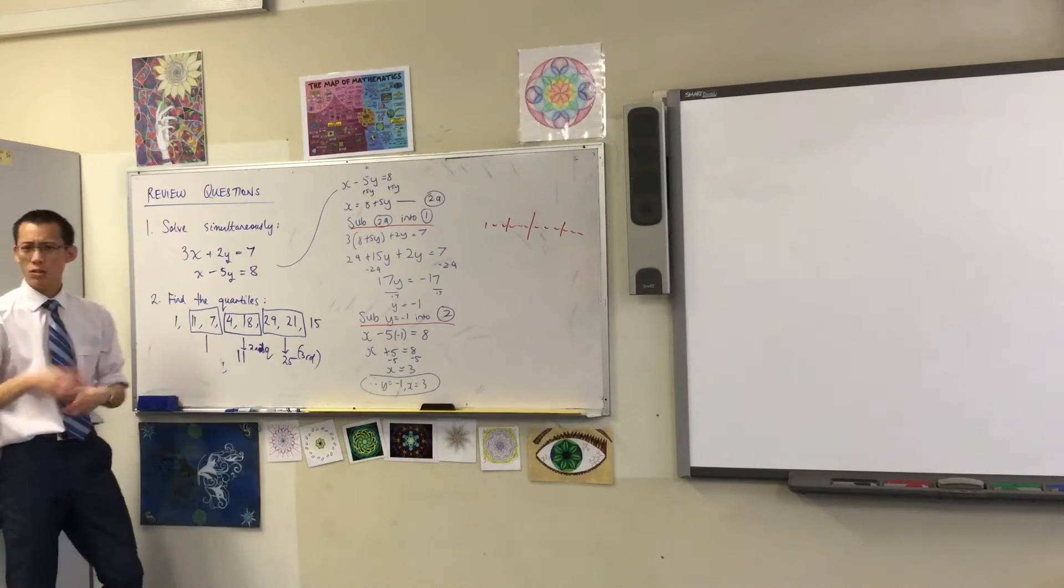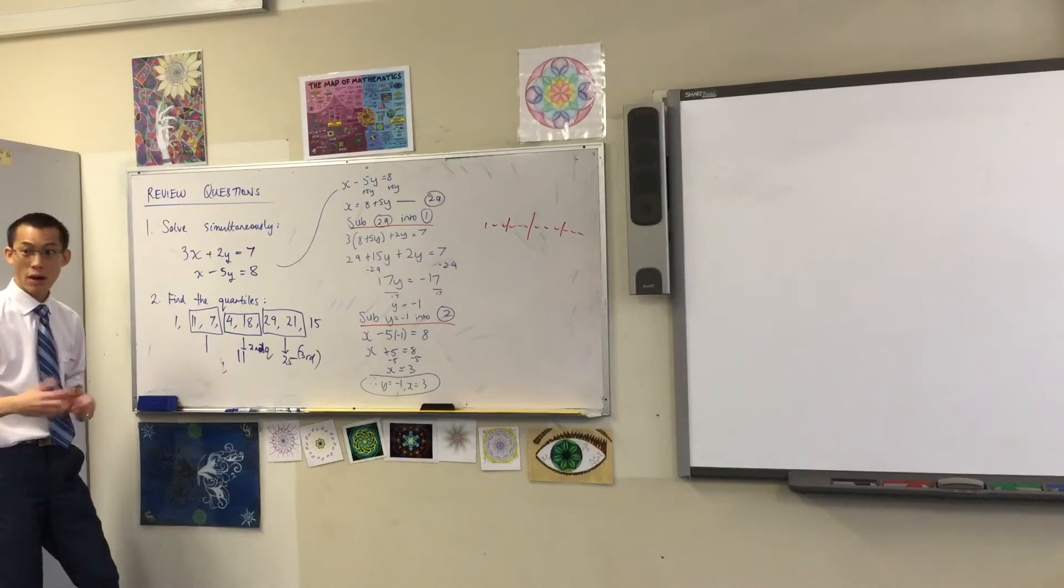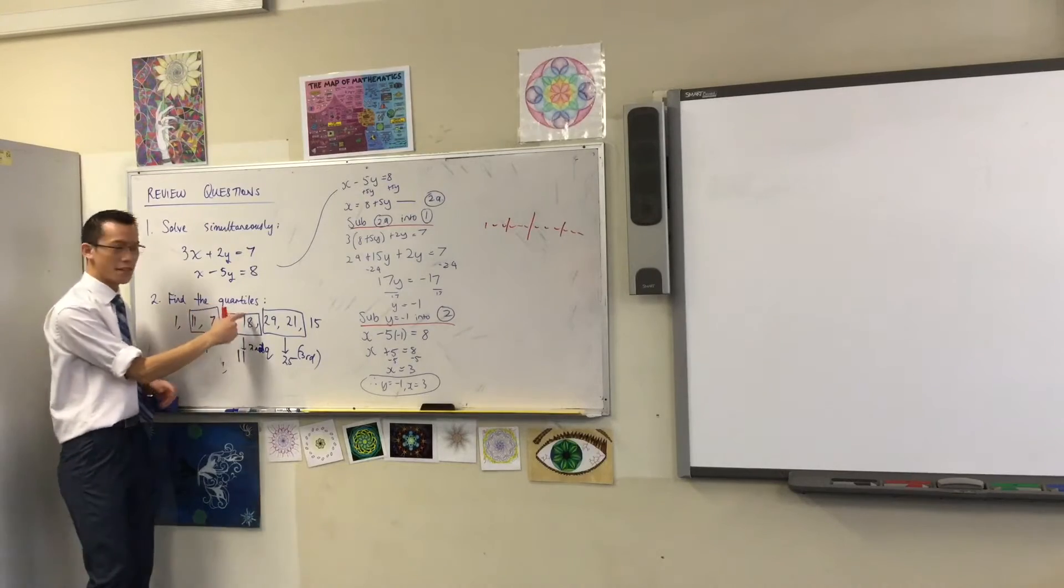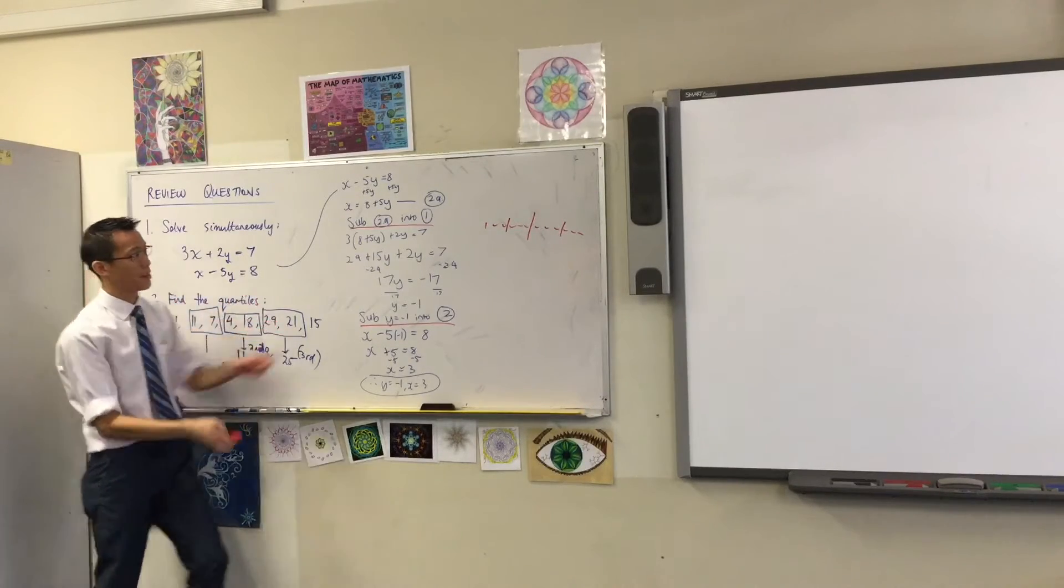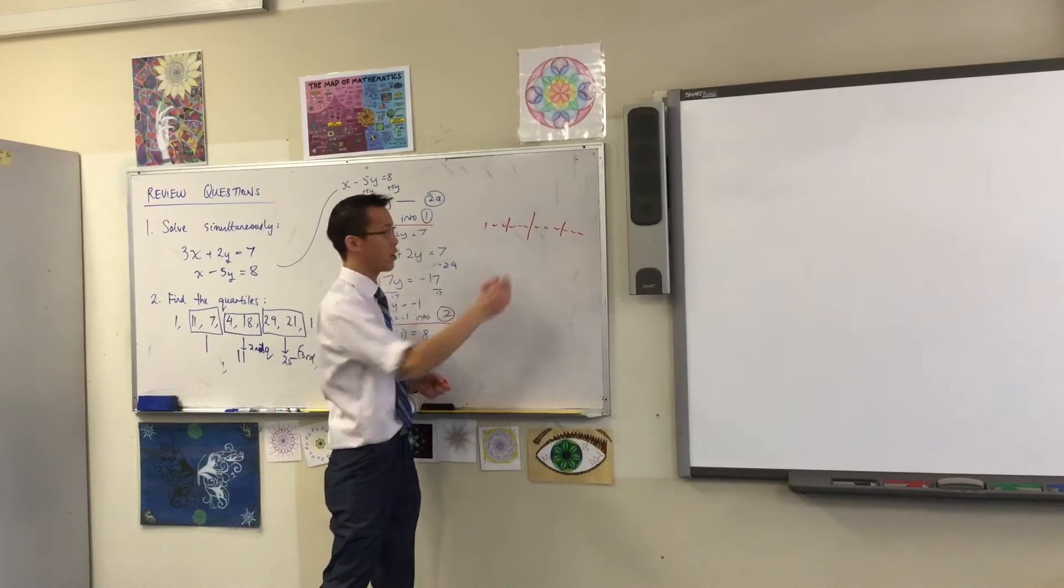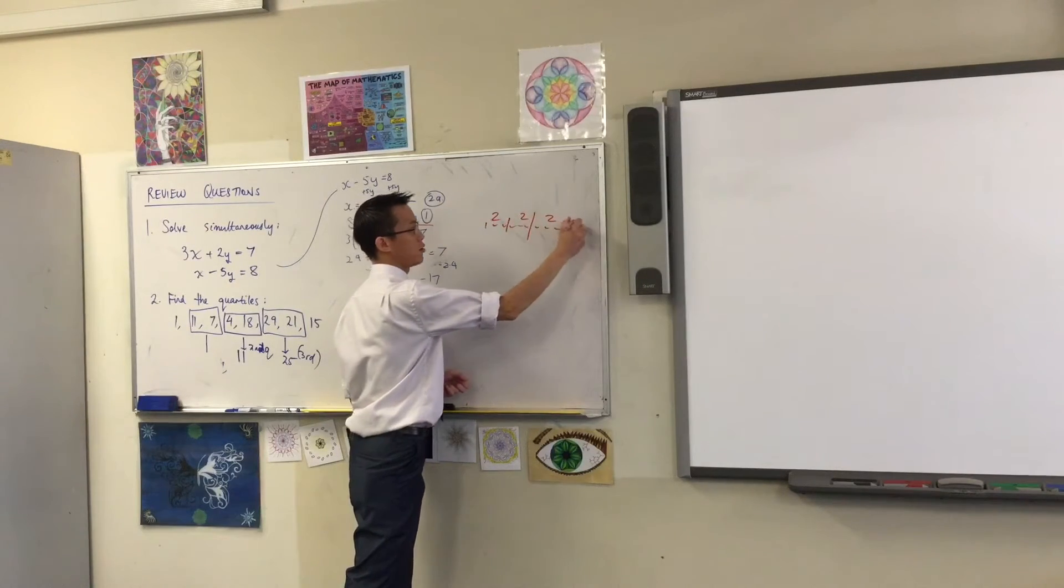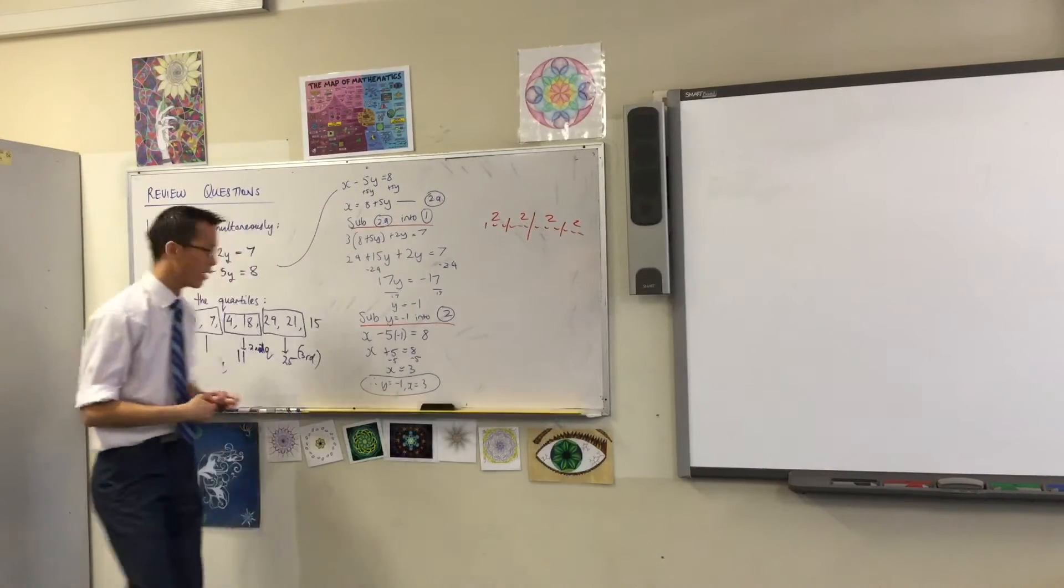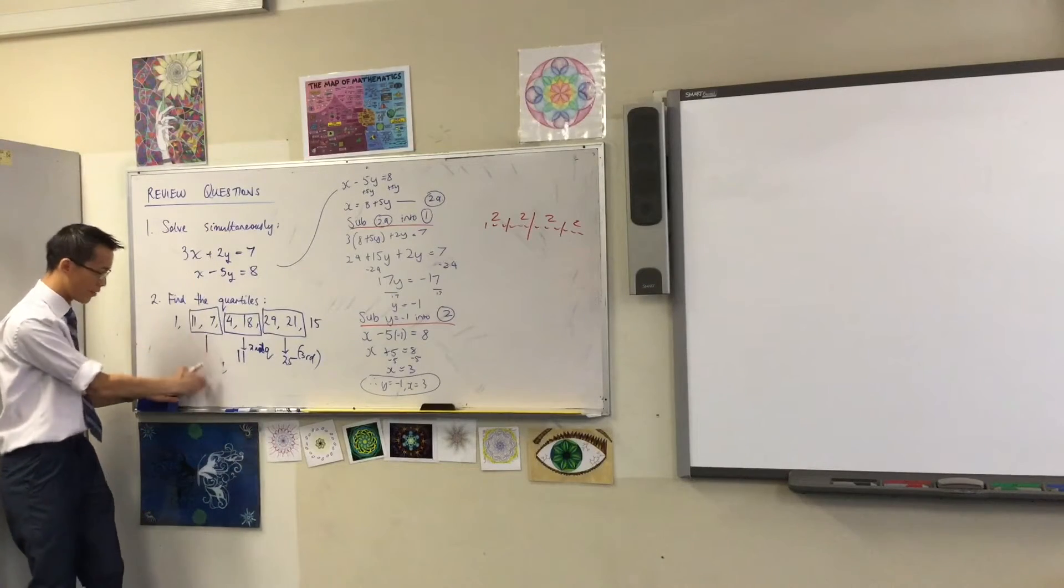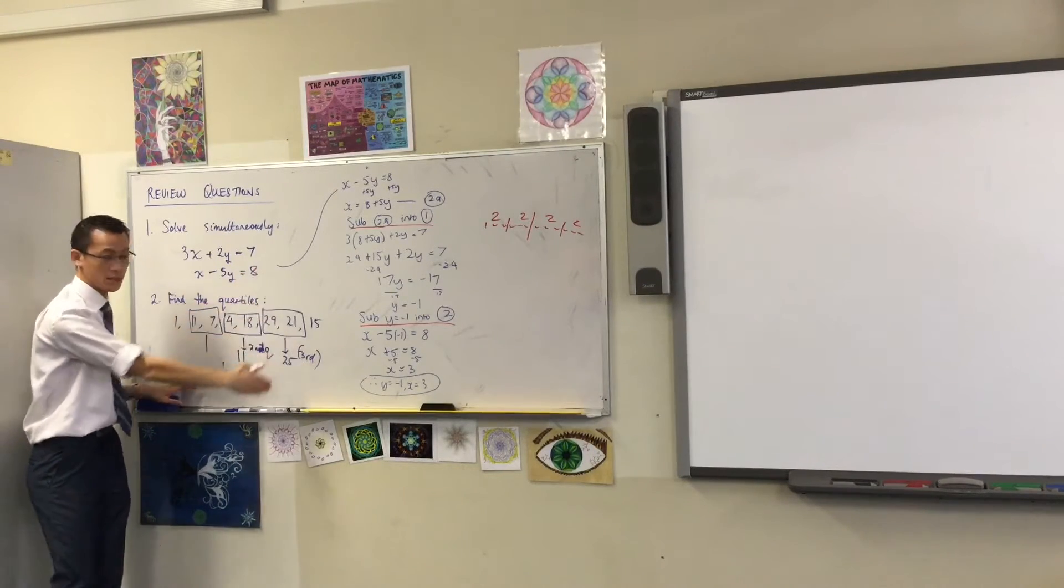Secondly, how many scores are there? Eight. There are eight scores. Which means each of the sections that I'm going to divide up into, like this, each of them, if there are eight scores in total, should have two scores, two scores, two scores, and two scores. So you can see how this divides here, this divides here, this divides here.